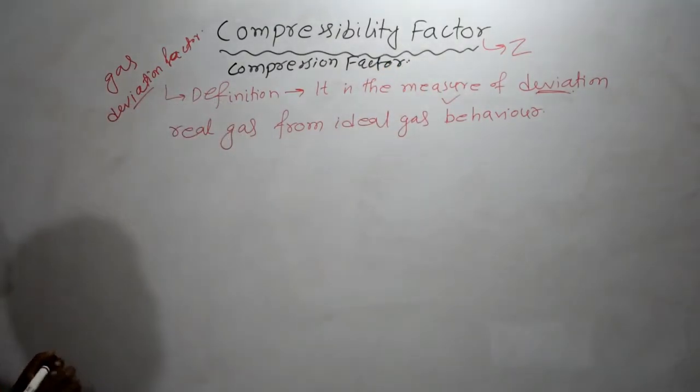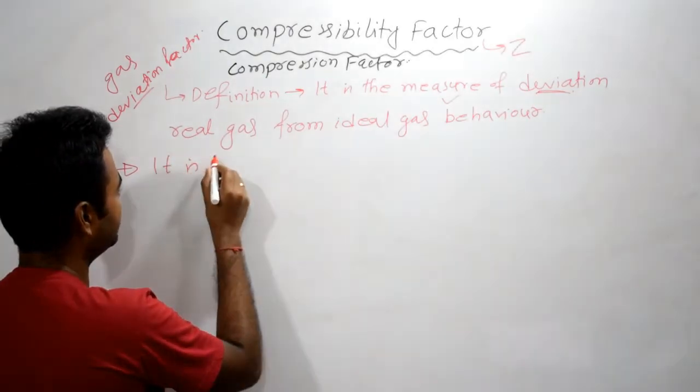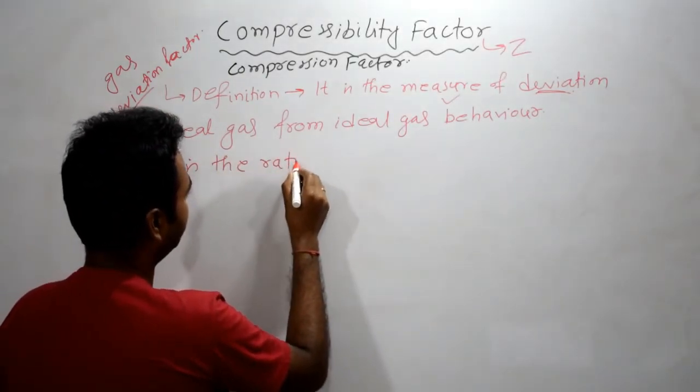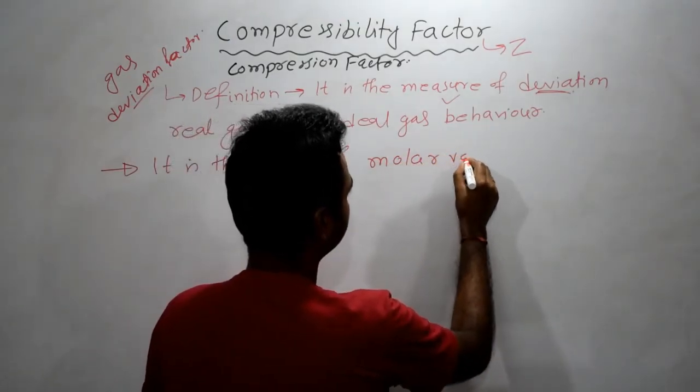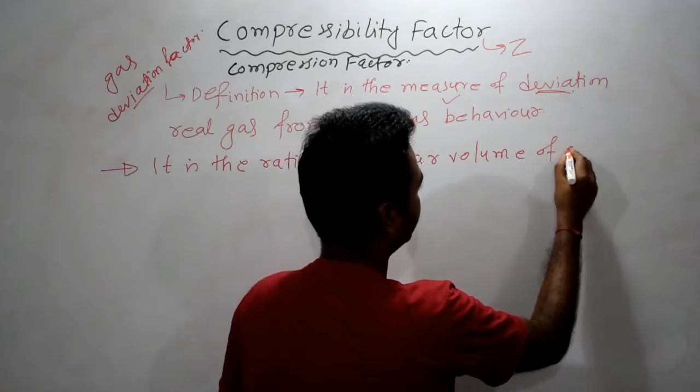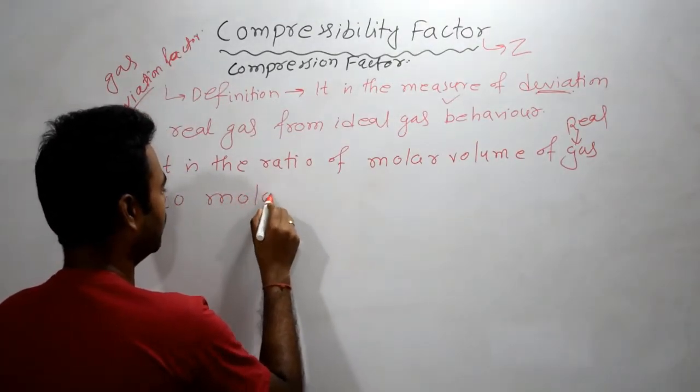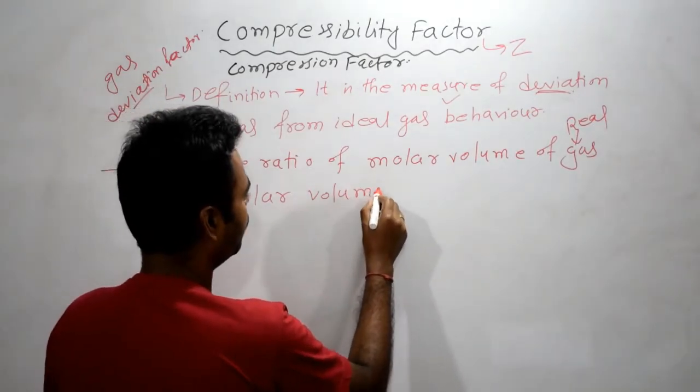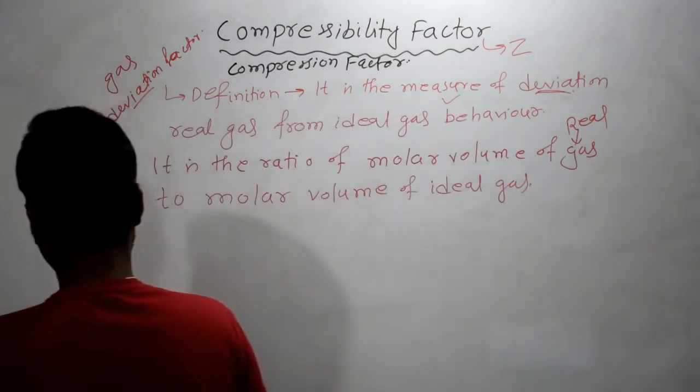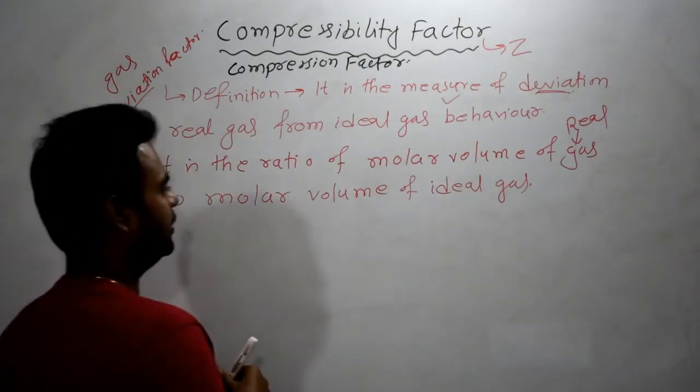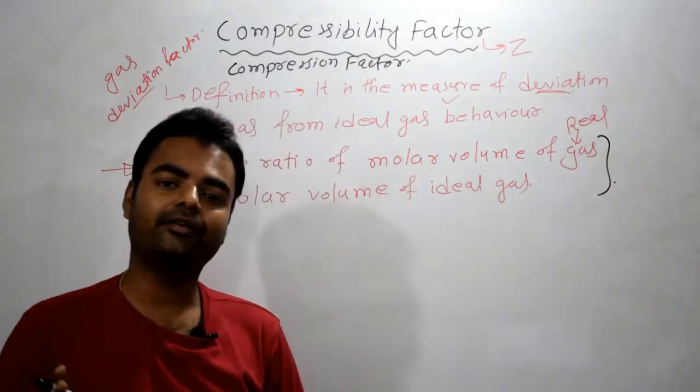Let me tell you another definition of this compressibility factor, which is in mathematical form. We can say it is the ratio of molar volume of gas, this gas means a real gas, to the molar volume of ideal gas. But here is the key thing. In general, we miss that thing. If you are writing this thing only, then it is not completely correct. There is some problem in this.